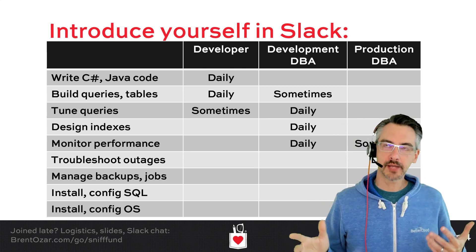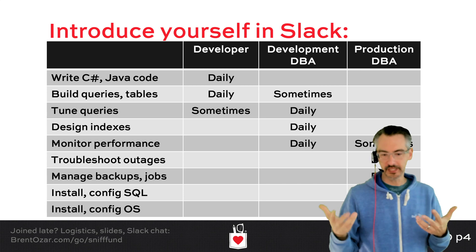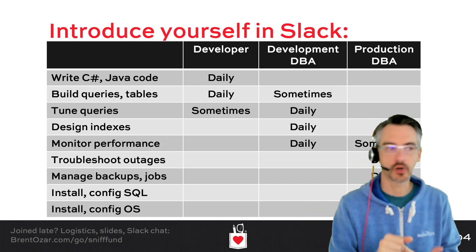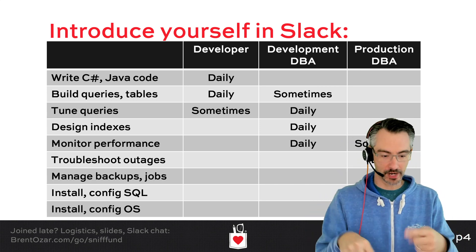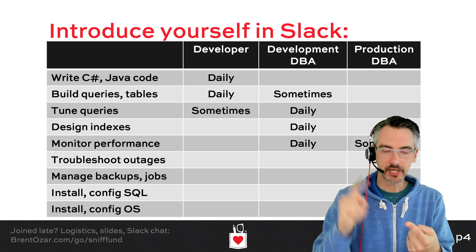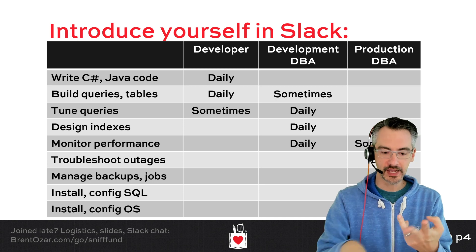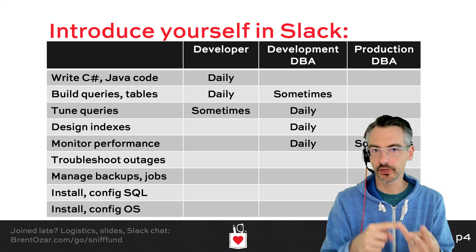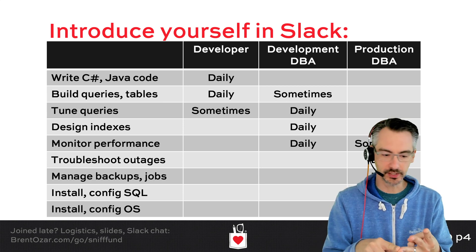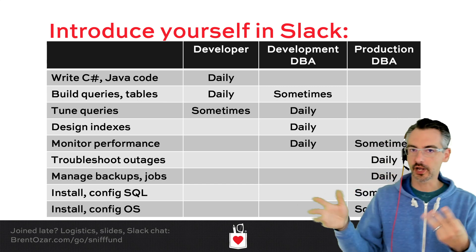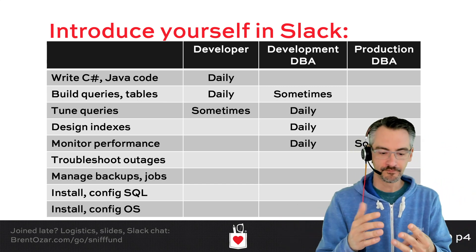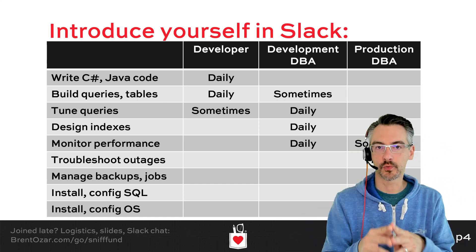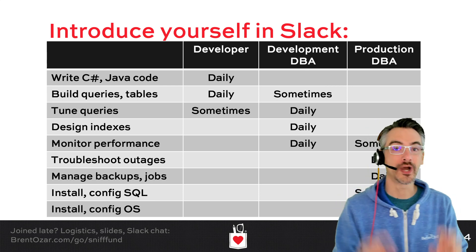So Streamlabs OBS and OBS work with streaming to Twitch, Facebook, and YouTube — those are the three common ones. You could go to other platforms like Periscope, but Twitch, Facebook, and YouTube are the ones people stream to the most.